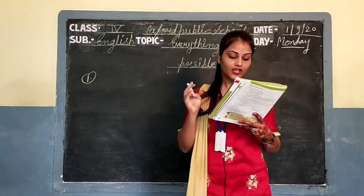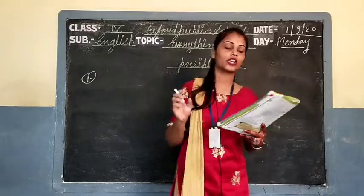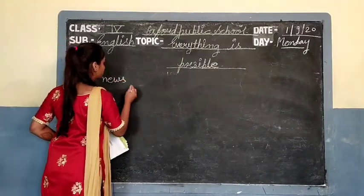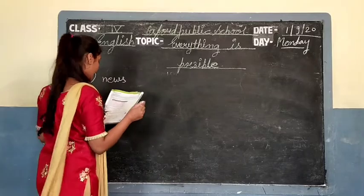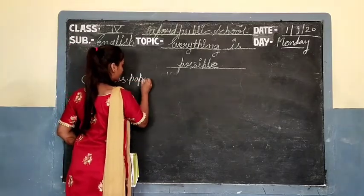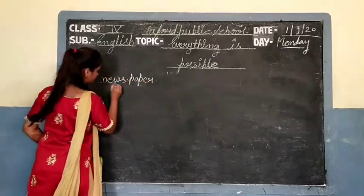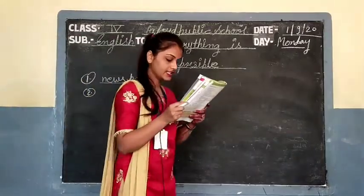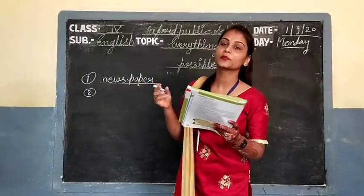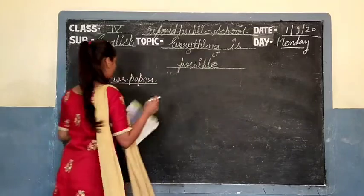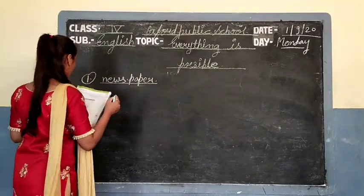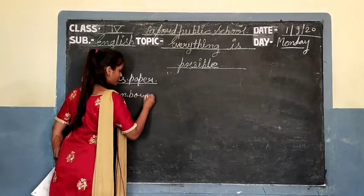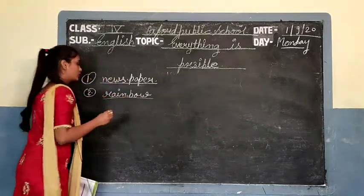First fill-in-the-blank: 'that gives us the latest news' — यहाँ हो जाएगा newspaper. Newspaper gives us the latest news. Second: 'there is a beautiful ___ in the sky.' What is beautiful in the sky? The rainbow — तो यहाँ हो जाएगा rainbow. Second column में हो जाएगा rainbow.